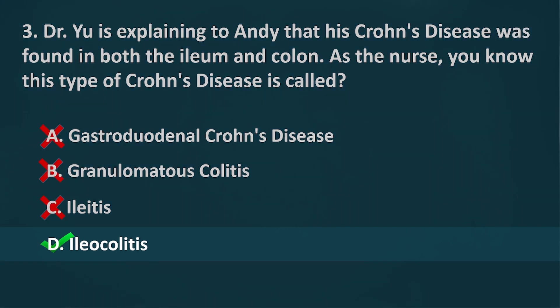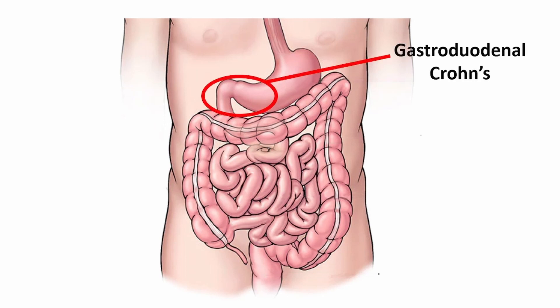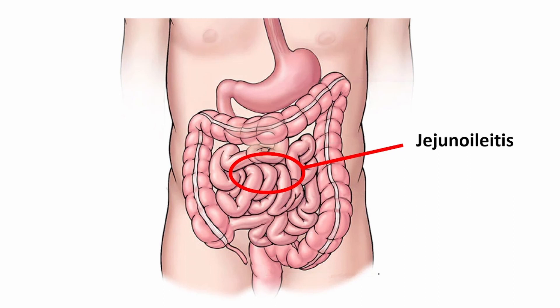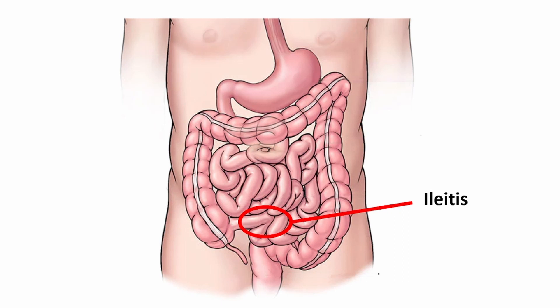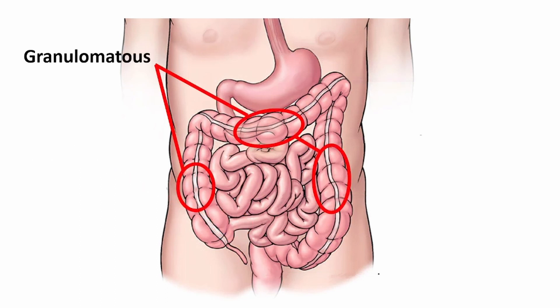The correct answer is Letter D, Iliocolitis. There are 5 types of Crohn's disease depending on the location of the inflammation. First, gastroduodenal Crohn's disease affects the stomach and duodenum, or the first part of the small intestine. Next, jejunoileitis occurs in the jejunum and upper part of the ileum. Ileitis causes inflammation and irritation of the ileum. Iliocolitis affects the ileum extending to the colon. Lastly, Crohn's colitis, also known as granulomatous colitis, affects the colon, which is the main part of the large intestine.